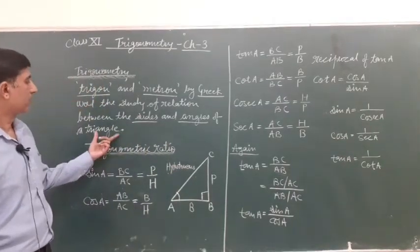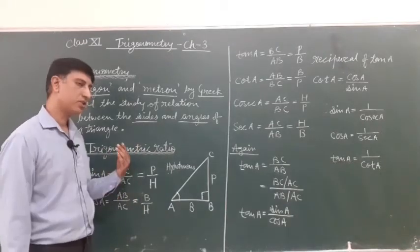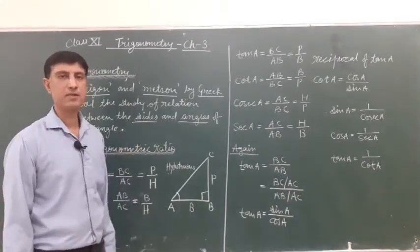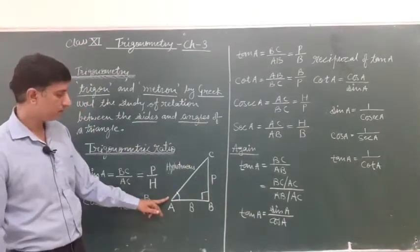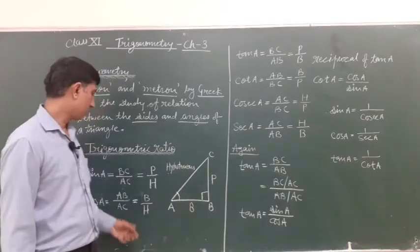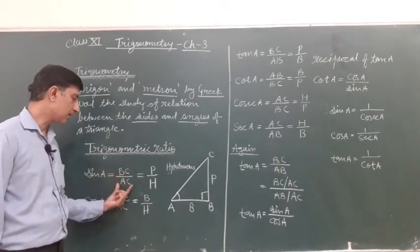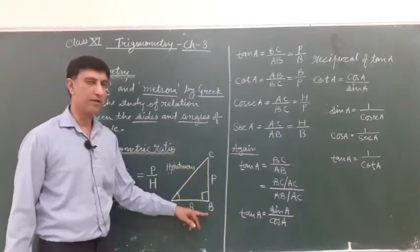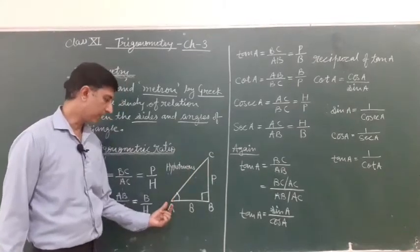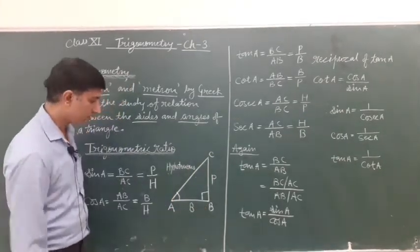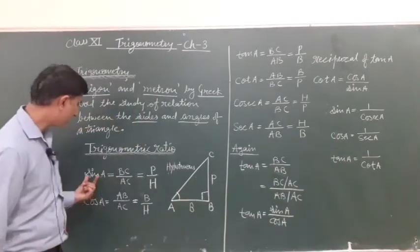Next, Trigonometric ratio. First sin A. What is mean sin A? In right angle triangle ABC, value of sin A it is equal to BC upon AC. BC is perpendicular of this triangle and AC is hypotenuse and AB is base because angle, it is related to angle A.